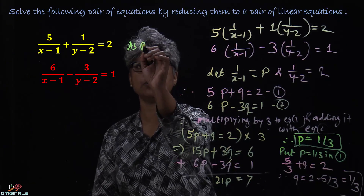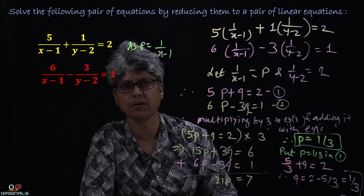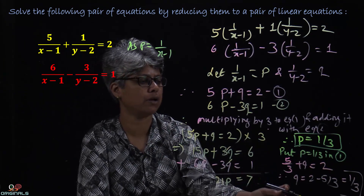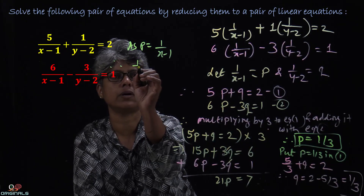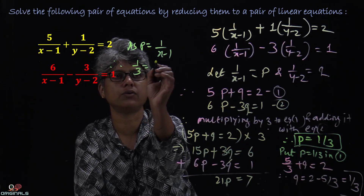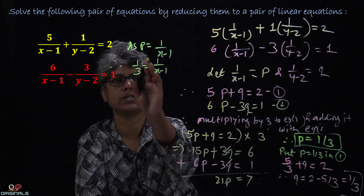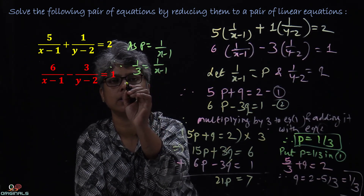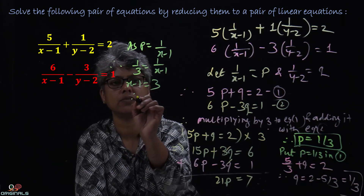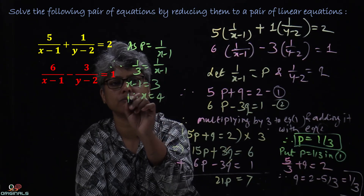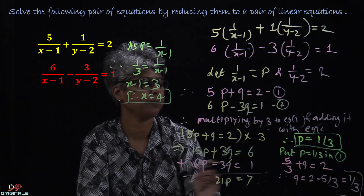P is equal to 1 upon (x minus 1), and P equals 1/3. Therefore, 1/3 = 1 upon (x minus 1). Cross-multiplying, x minus 1 = 3, therefore x = 4. So we get x equal to 4.